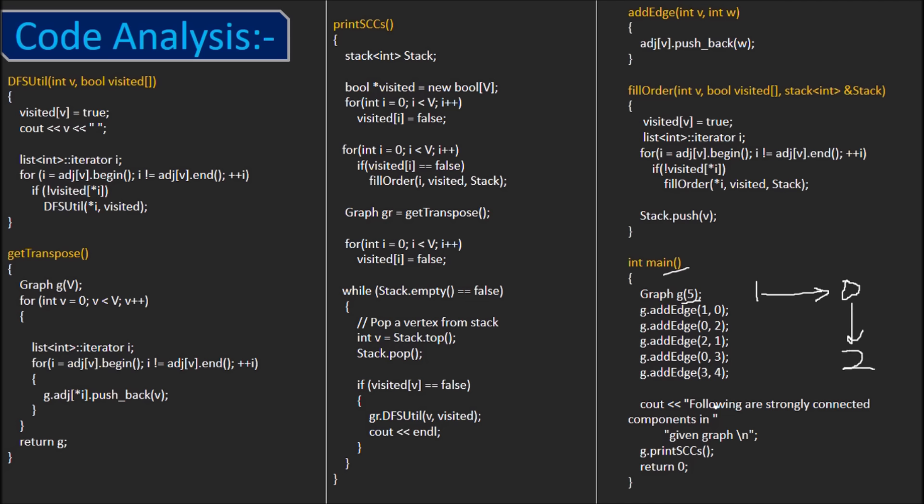Next, function PrintSCCs is called. At the beginning, none of the vertices are visited, so all are marked with visited as false. Now, we pick the vertex one by one and check if vertex is unvisited, we call the function FillOrder on that vertex.